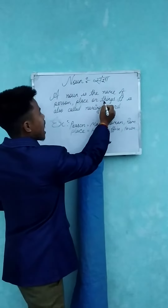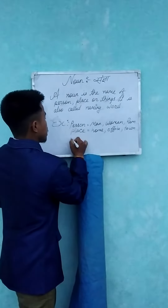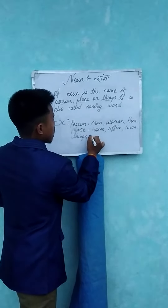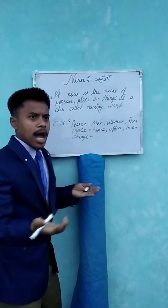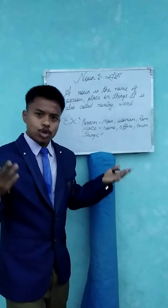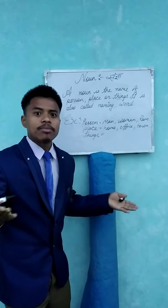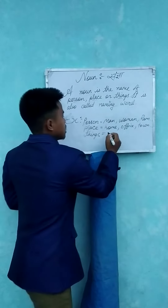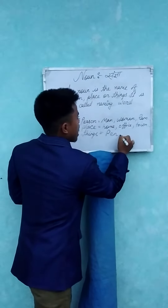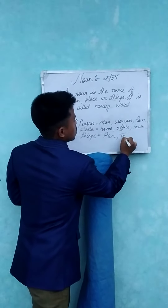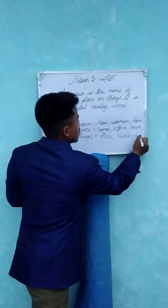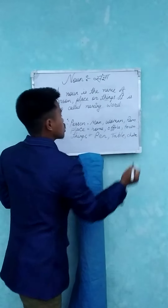Now let's go to the last category: things. What is the name of things? Whatever you use in the morning, we use things. You can add anything like pen, table, chair — C-H-A-I-R — chair, etc.